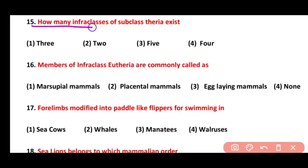Question 15. How many infra classes of subclass Theria exist? Options: 3, 2, 5, or 4. Correct answer is option 1. There are 3 infra classes in subclass Theria: Eutheria, Metatheria, and Ornithodelphia. There is also one extinct class, Pantotheria.